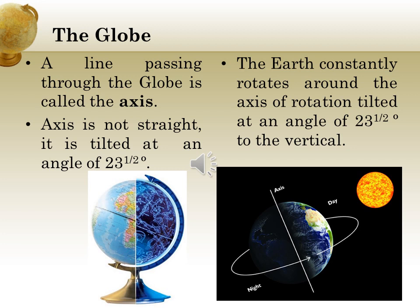The axis is not a straight line — it is tilted at an angle of 23 and a half degrees, and so is the earth. The earth constantly rotates or turns around the axis of rotation, tilted at an angle of 23 and a half degrees to the vertical. The axis of rotation of the globe is similar to that of the earth.